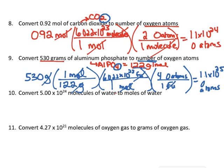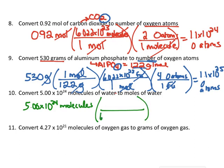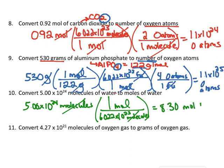Let's try the next one. They give me 5.00 times 10 to the 24th molecules, and they want moles. It could have said water or carbon dioxide — it doesn't really matter for this question, because I always know there are 6.022 times 10 to the 23rd molecules in one mole. Molecules cancel out, and in my calculator I get 8.30 moles of H₂O, since that's what they give me in the problem.